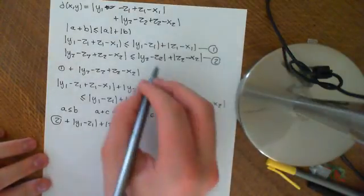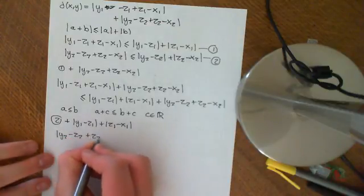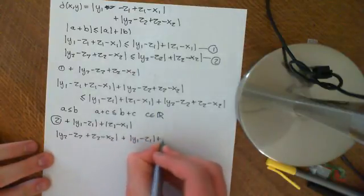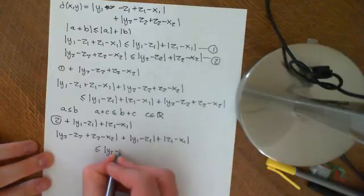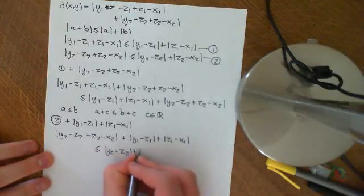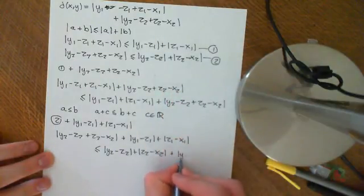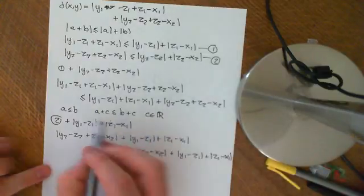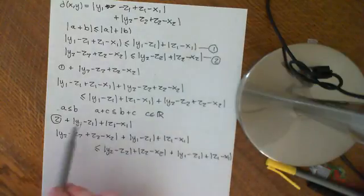So if you add on this onto both sides of 2, you get that y2 minus z2 plus z2 minus x2 plus y1 minus z1 plus z1 minus x1 is less than or equal to y2 minus z2 plus z2 minus x2. So I'm just taking this bit from inequality 2 plus y1 minus z1 plus z1 minus x1. So that is still true, exactly the same reason because the ordered field axioms of the real numbers. I'm just adding a real number onto both sides of inequality 2. And the real number I added was this.